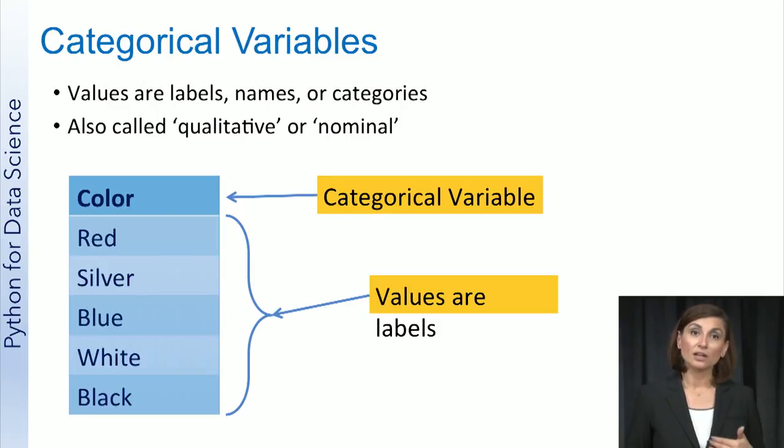These are non-numeric values that describe some quality or characteristics of an entity. These values can be thought of as names or labels that can be sorted into categories. Therefore, categorical variables are also referred to as qualitative variables or nominal variables.